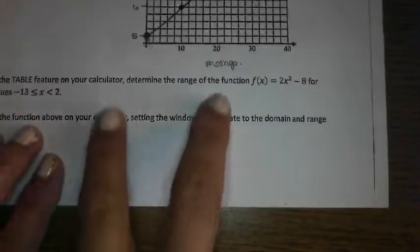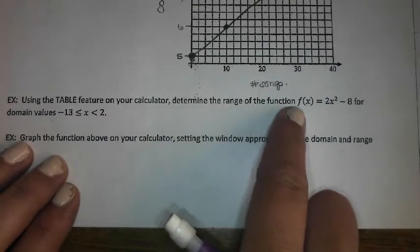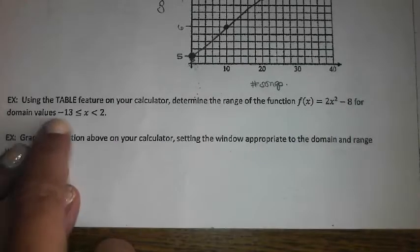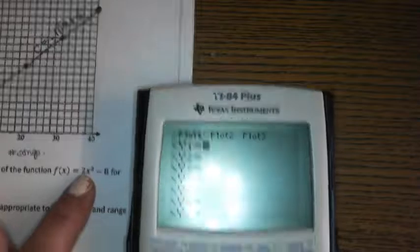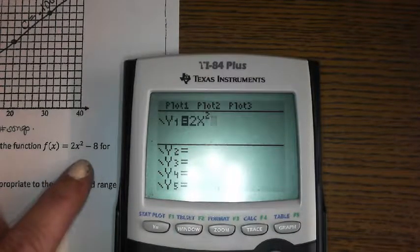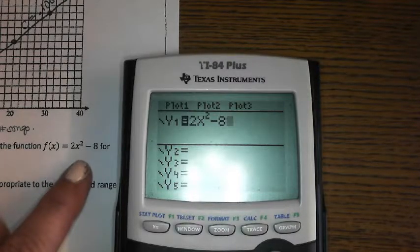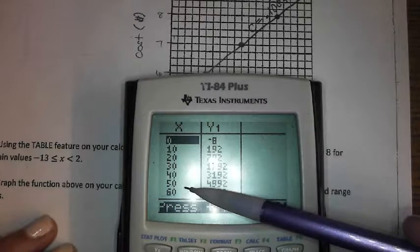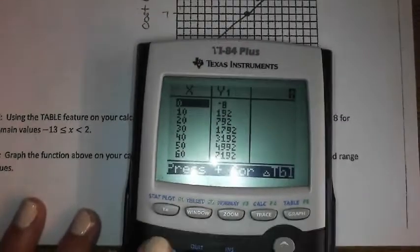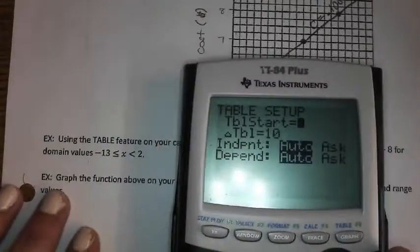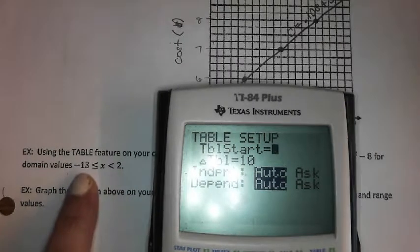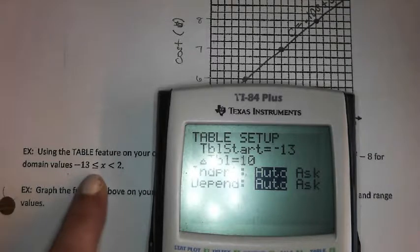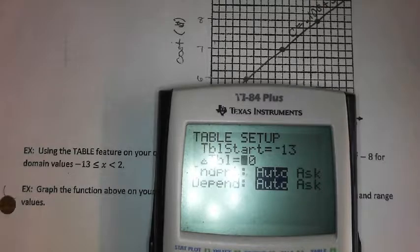So we jump down to the next example. It wants us to use our table feature again to determine the range of the function. Here's our new function given these domain value X's. We're going to go back to our Y equals and plug in the new function that they want us to look at, 2X squared minus 8. Then I'm going to use the table feature, but I'm not just going to jump right to the table because it's still counting by 10. I want to set my table, so I go to 2nd and then this window button with table set above it. Where do I want my table to start based on the domain they gave me? Negative 13. And what should I count by? Just 1.